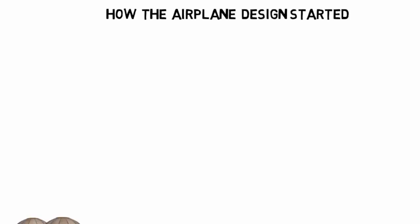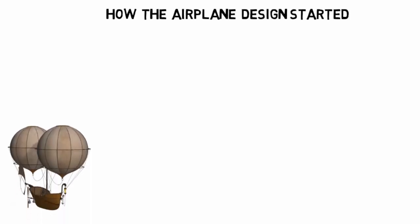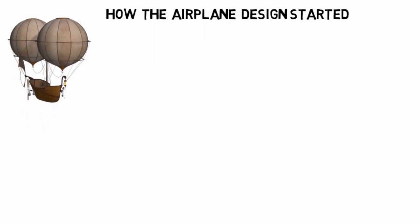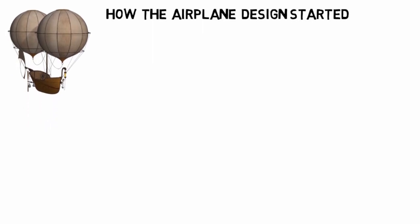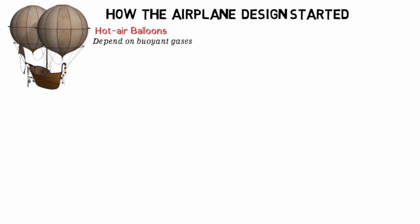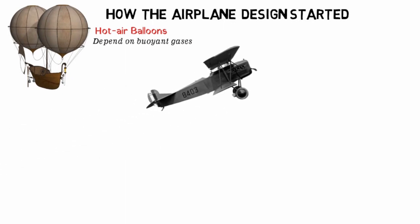By definition, an airplane is a fixed-wing, heavier-than-air vehicle powered for flight. Unlike blimps, hot air balloons, and other lighter-than-air aircraft that depend on buoyant gases,